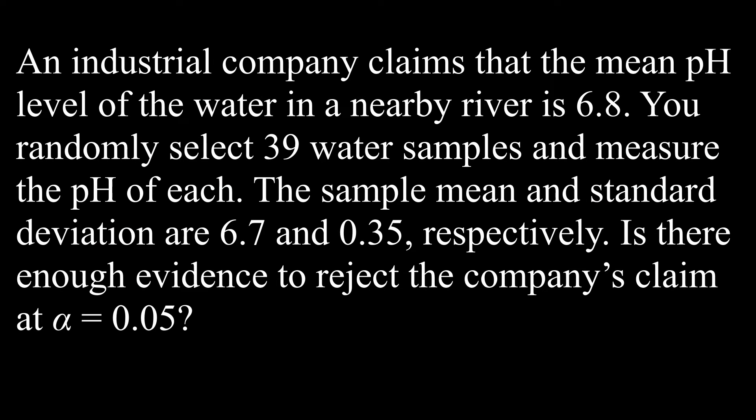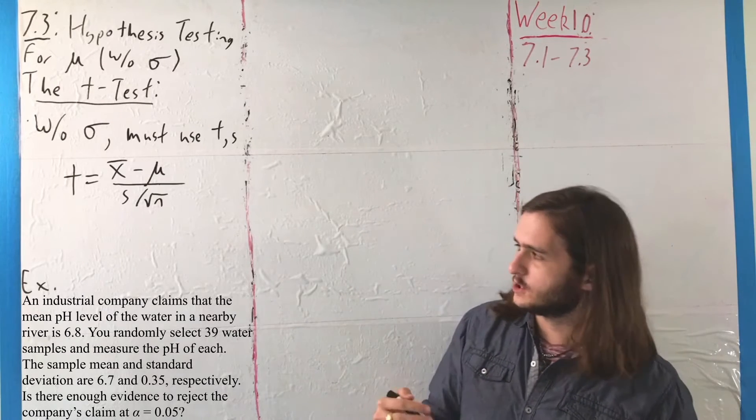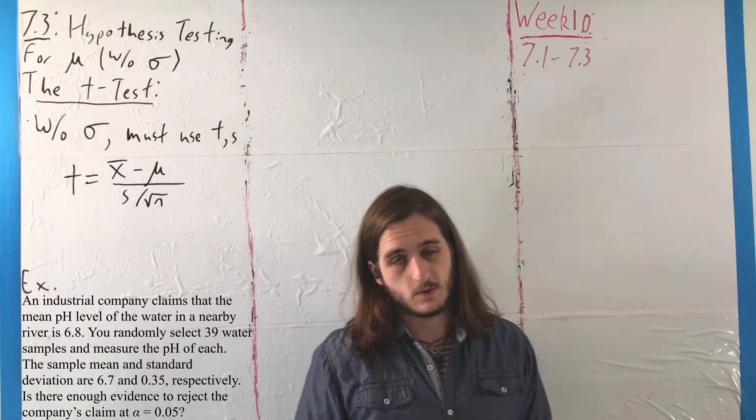So for this example, we have that an industrial water company claims the mean pH level in a nearby river is 6.8, and we suppose that you randomly select 39 samples from the river that have a mean of 6.7 and a standard deviation of 0.35, where what we want to do here is determine whether that information is enough to reject the company's claim at alpha equals 5%.